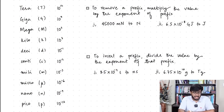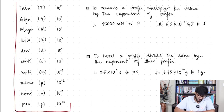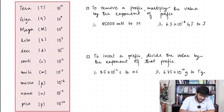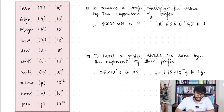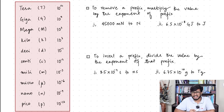Before we start converting, we need to look at the prefix table I have here. This table contains the prefixes we use in A-levels. In O-levels they went from Giga to Nano, but now we also have Tera and femto.